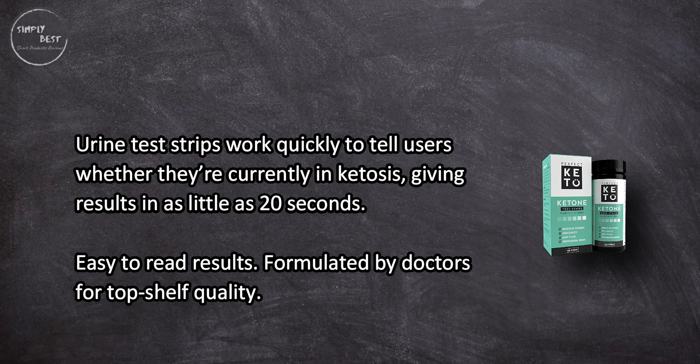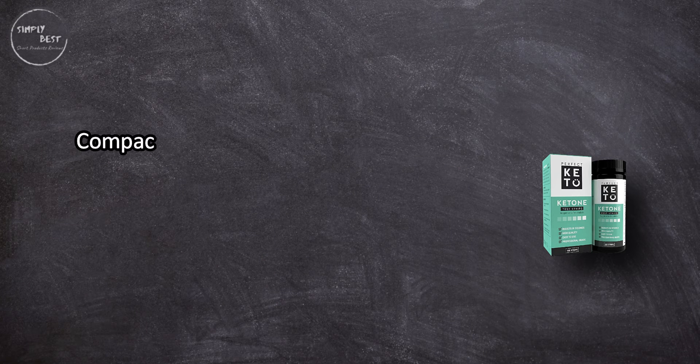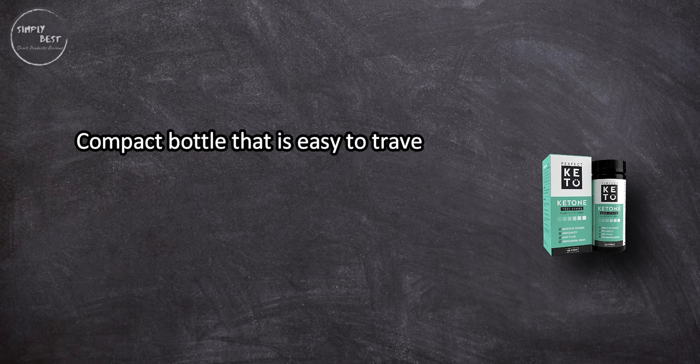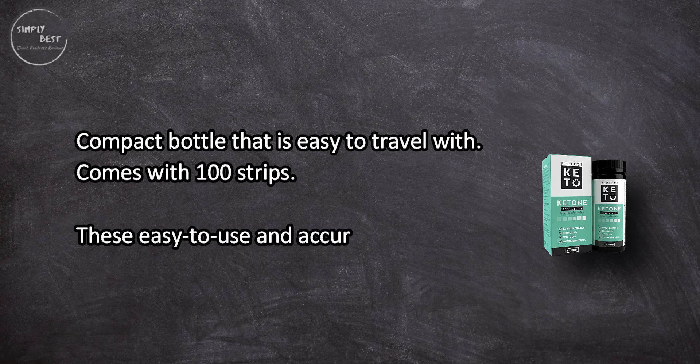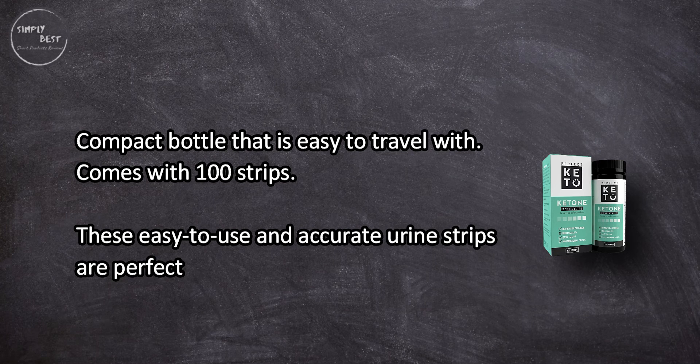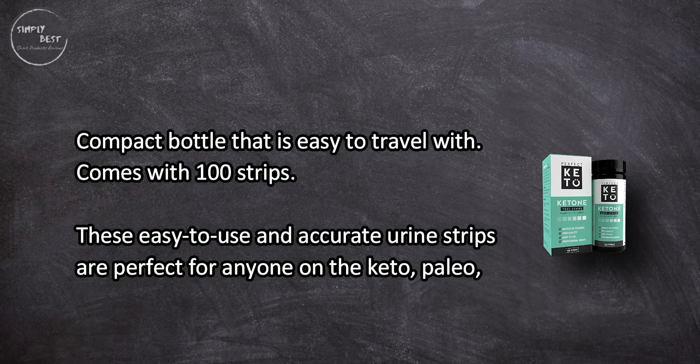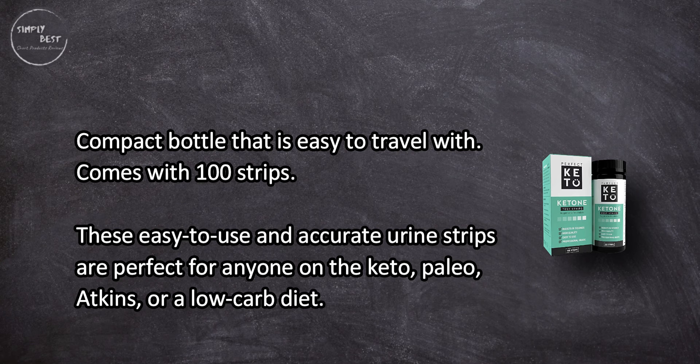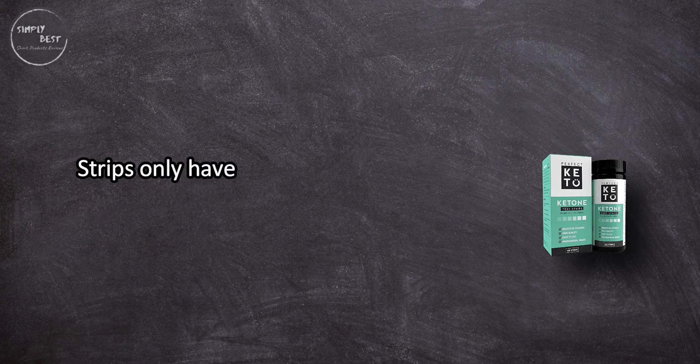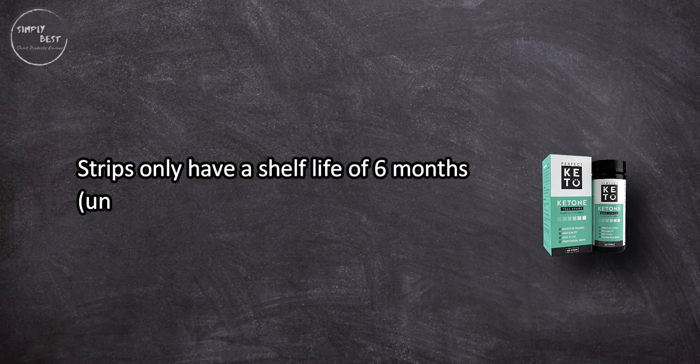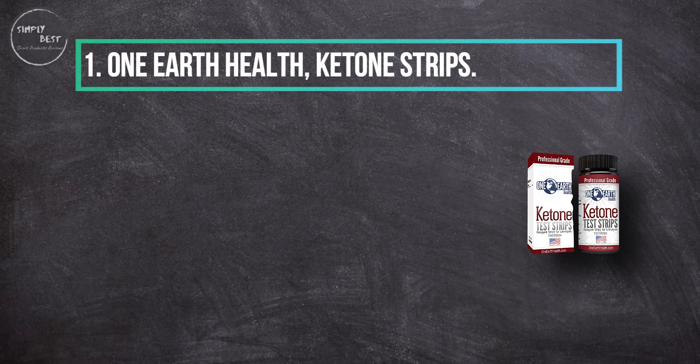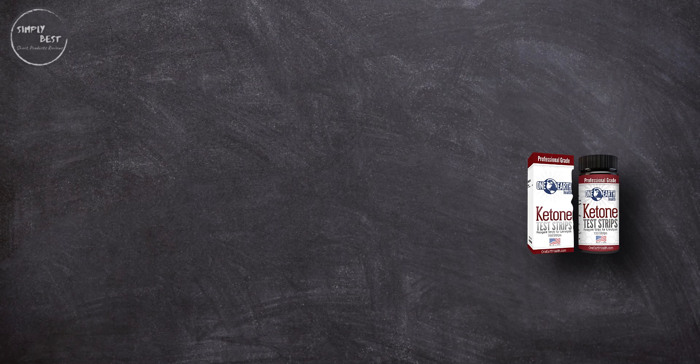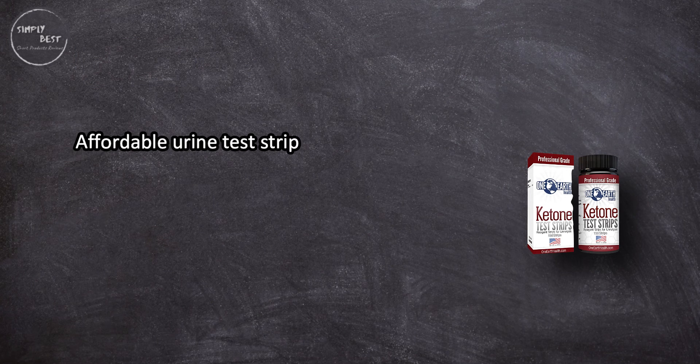Compact bottle that is easy to travel with, comes with 100 strips. These easy to use and accurate urine strips are perfect for anyone on the keto, paleo, Atkins, or a low-carb diet. Strips only have a shelf life of six months unopened.